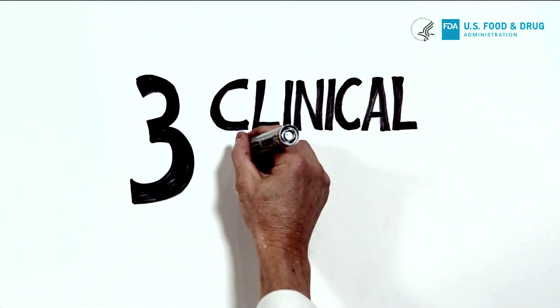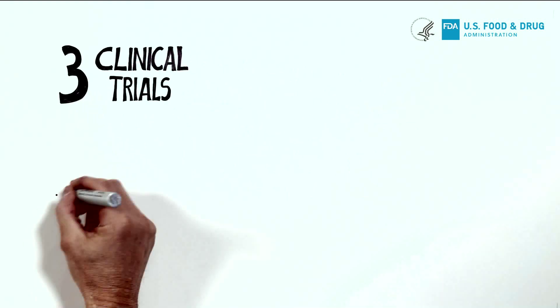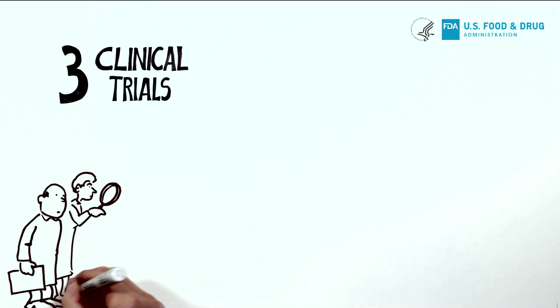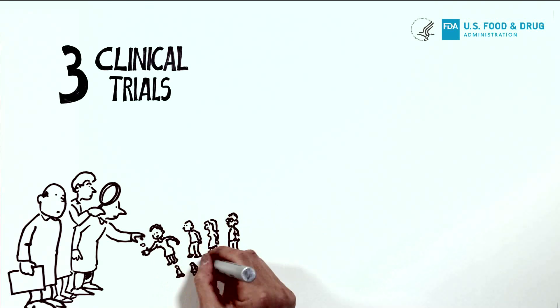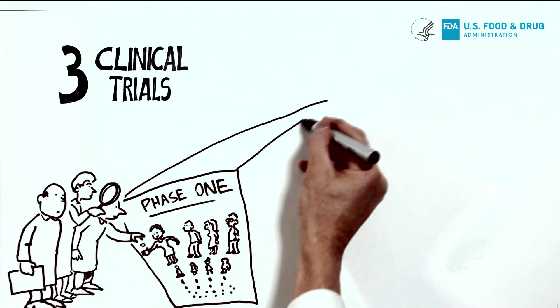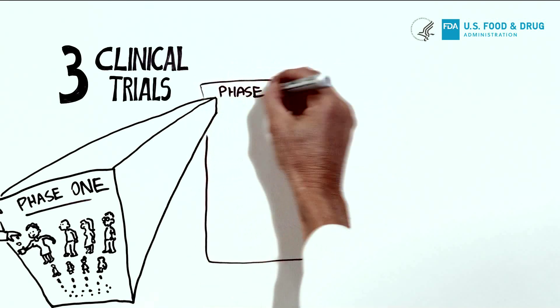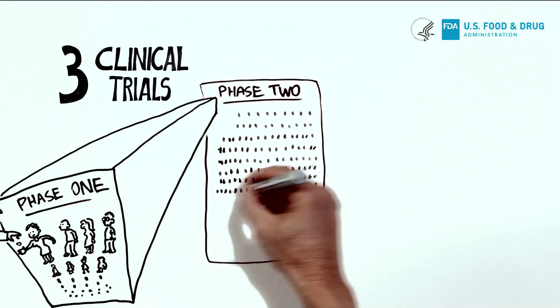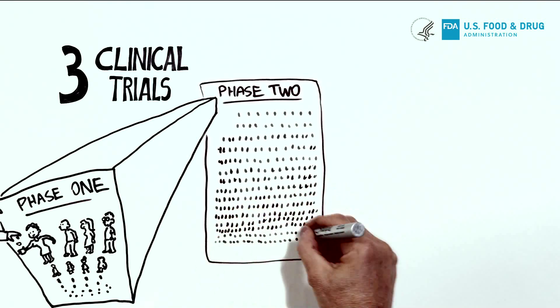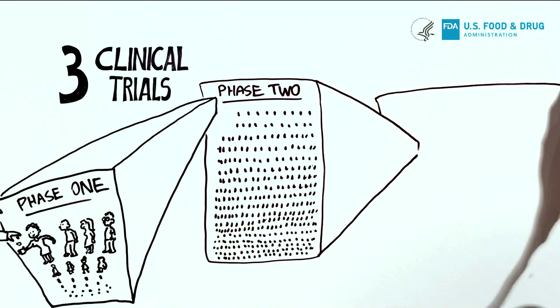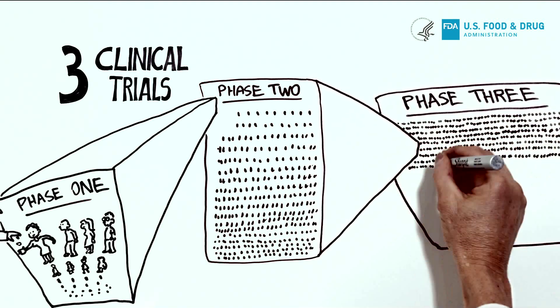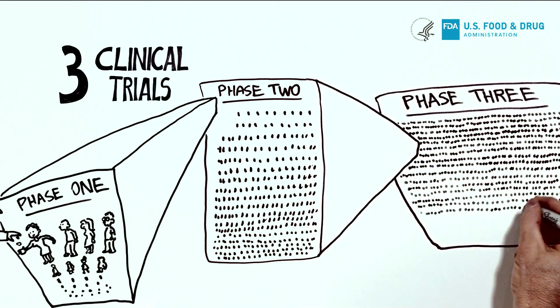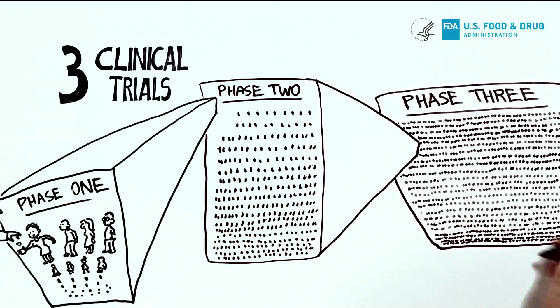Generally, there are three phases to a clinical trial in humans. Phase 1 emphasizes safety and typically includes 20 to 80 healthy volunteers. Phase 2 emphasizes effectiveness and typically includes hundreds of patients with a certain disease or condition. Phase 3 typically includes thousands of patients and is used to gather more information about the safety and effectiveness in different populations and different doses.